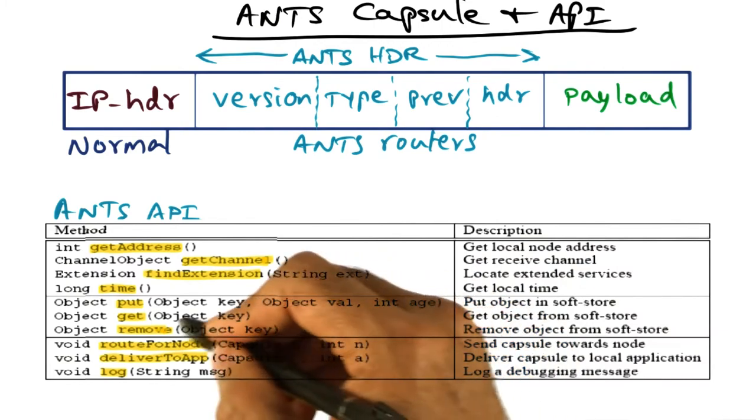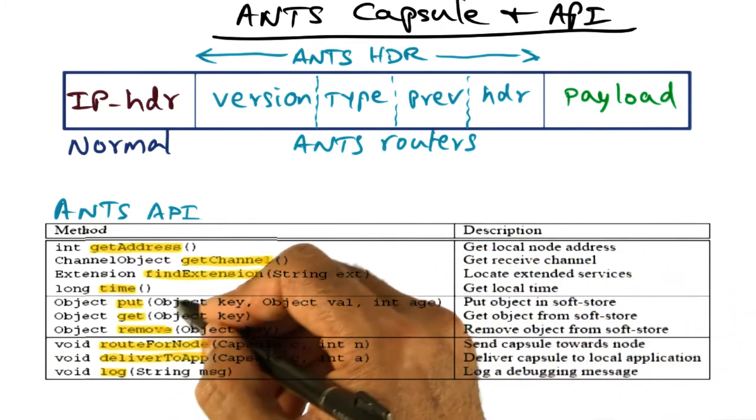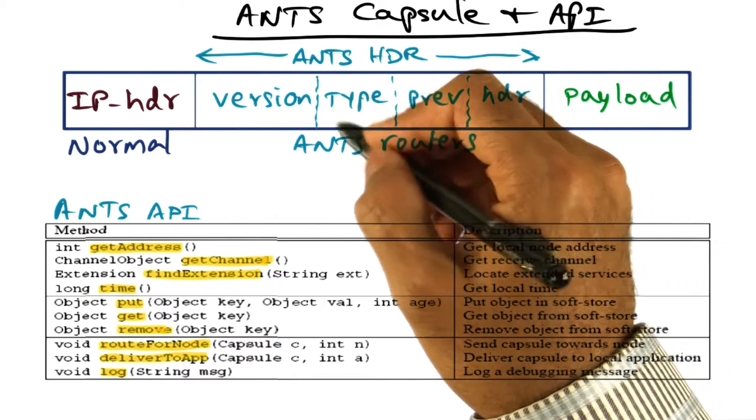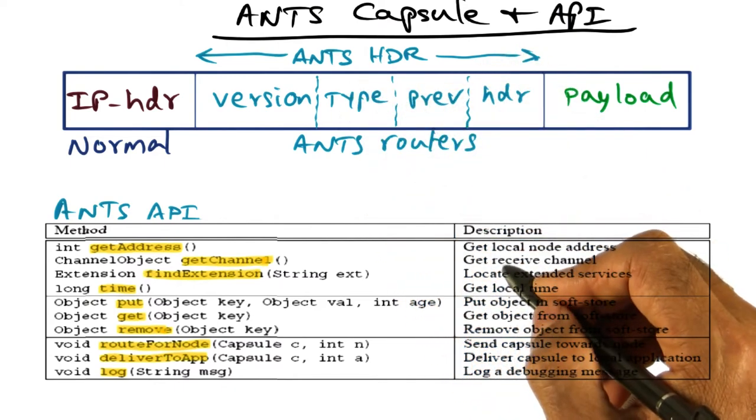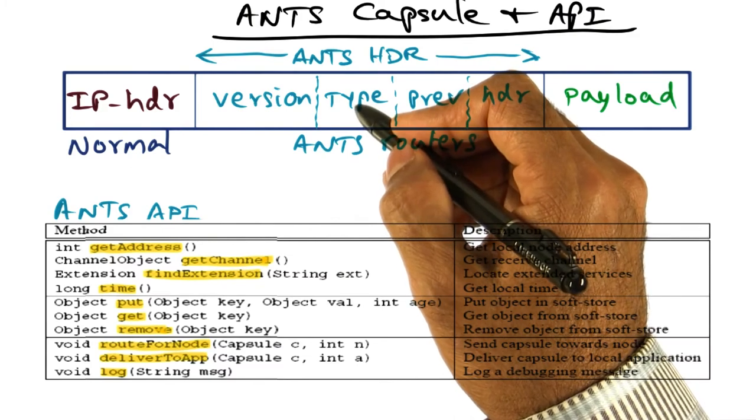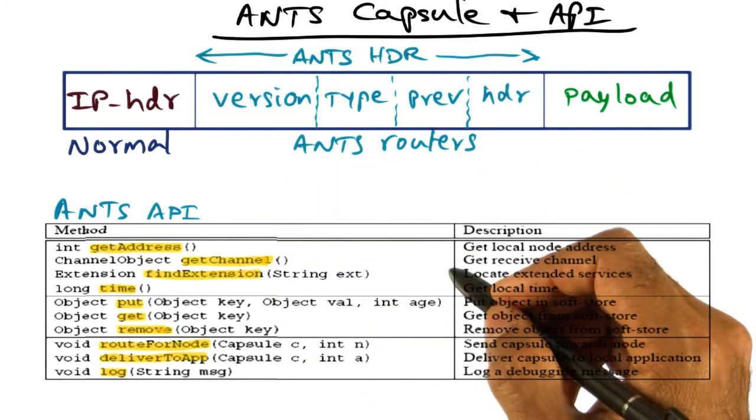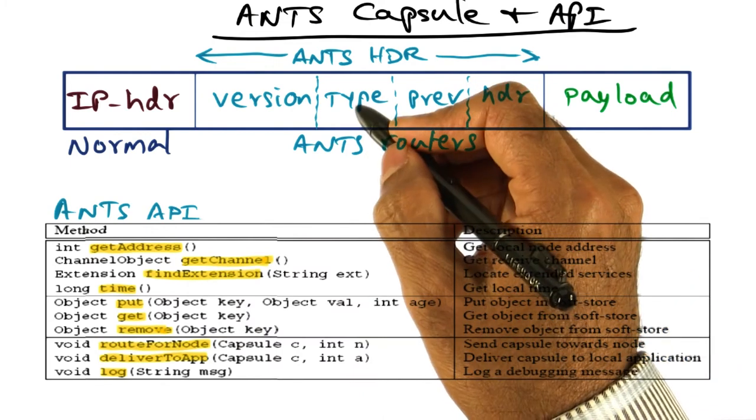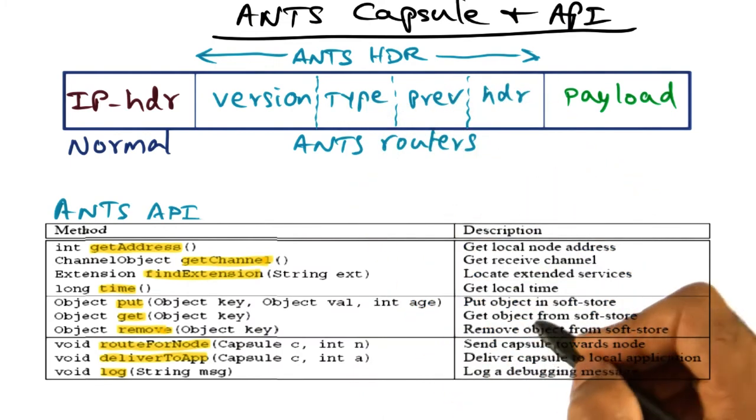So the second part of the API is for manipulating what is called the soft store. Now soft store is the storage that's available in every router node for personalizing the network flow with respect to a particular type of capsule. And I mentioned earlier that the type is only a pointer to the code, not the code itself.